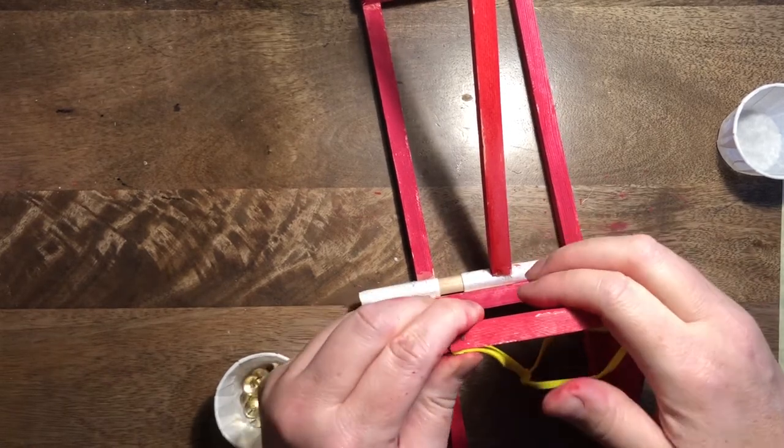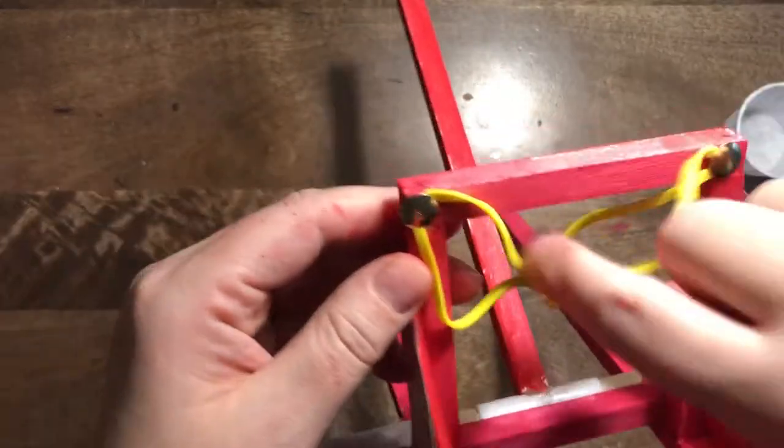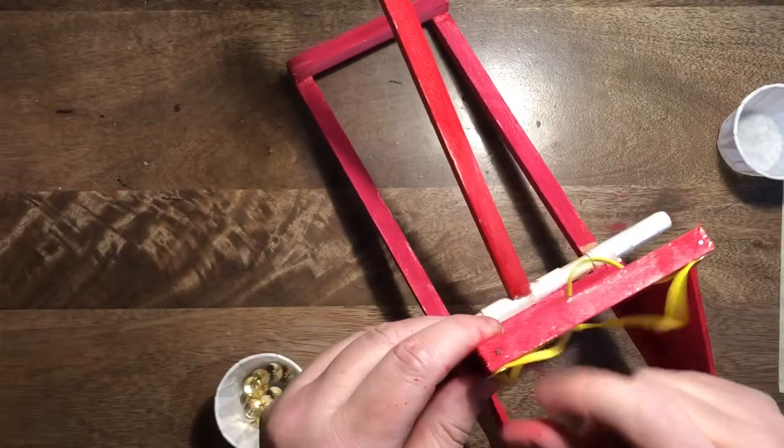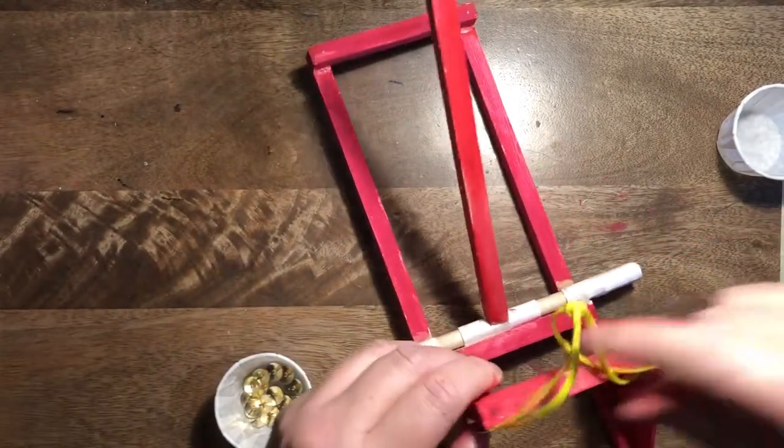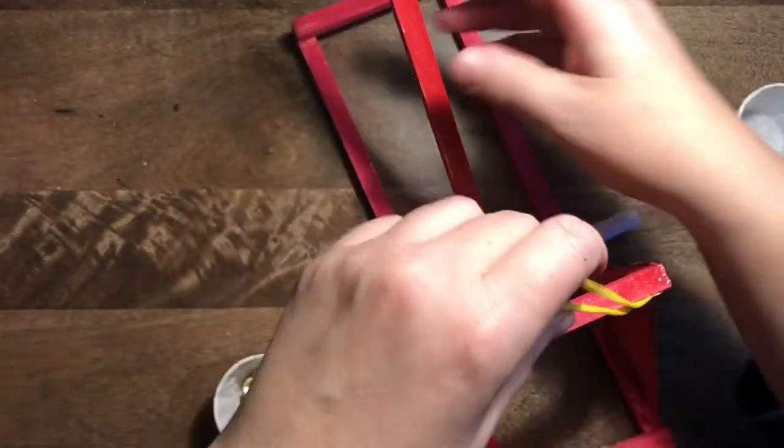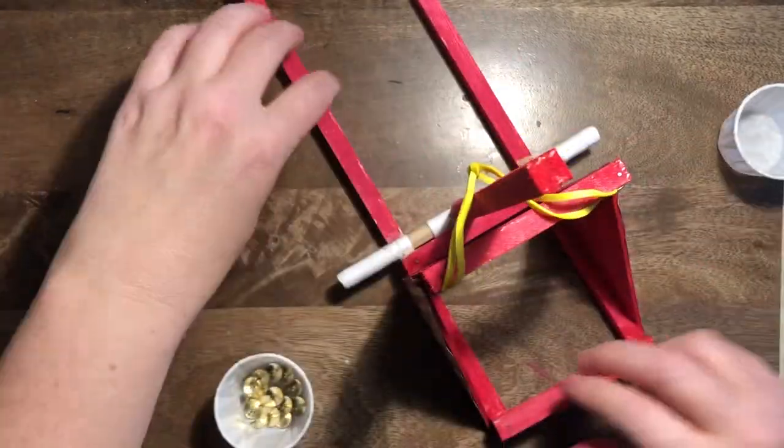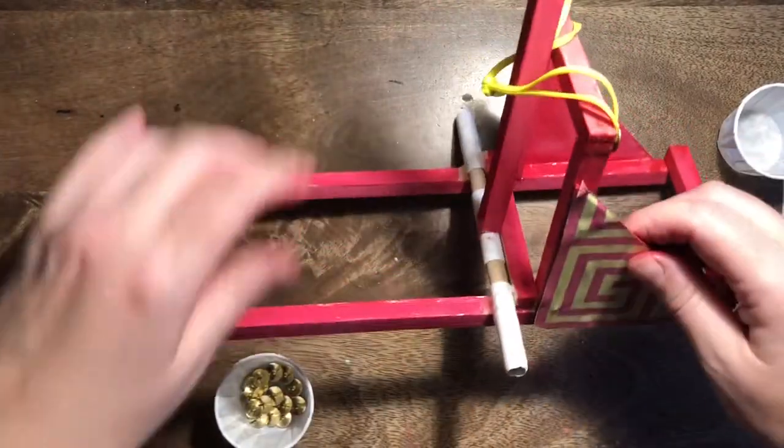Great, just give it a little bit of a wiggle and a test, make sure that's all nice and strong. Perfect, perfect. So now we need to get this rubber band over our firing arm, and this is fine just like this, have a little test, you'll see ping.